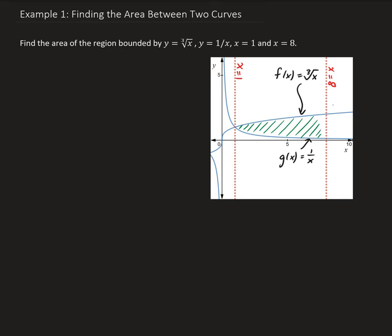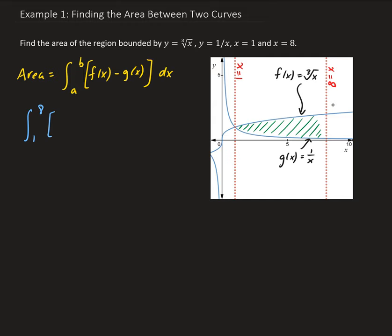The area is equal to the integral from a to b of f(x) minus g(x), where f is on the top and g is on the bottom. In this case, our integral is going to go between 1 and 8. The top function is the cube root of x, and the bottom function is 1 over x. That is the setup.